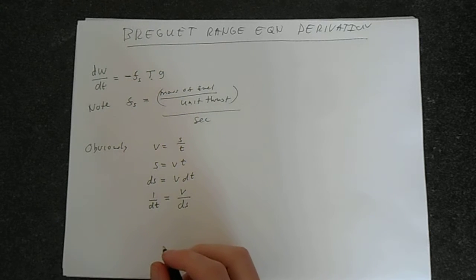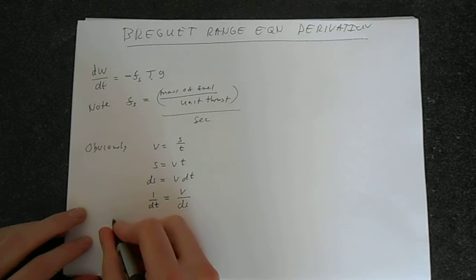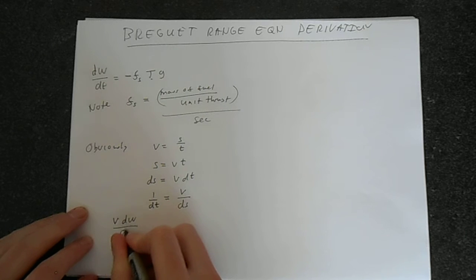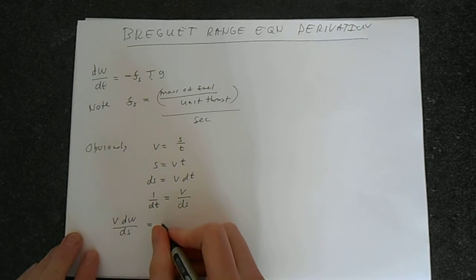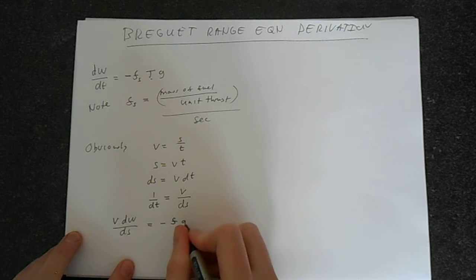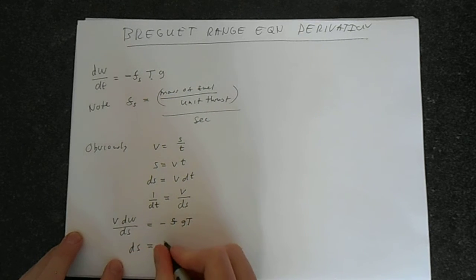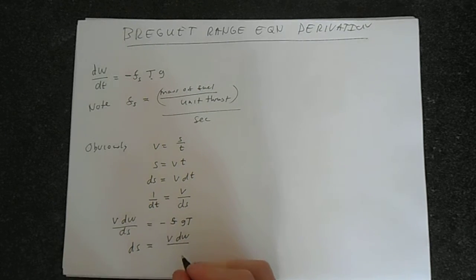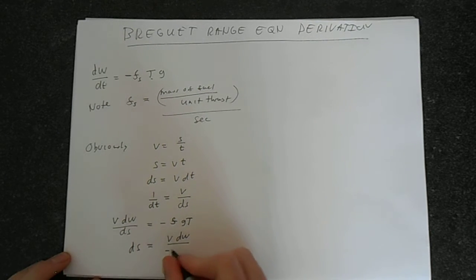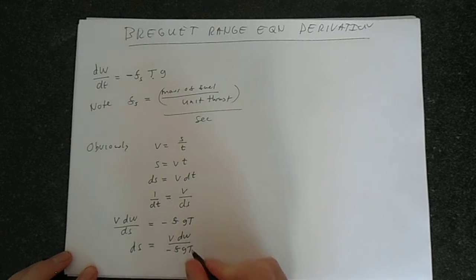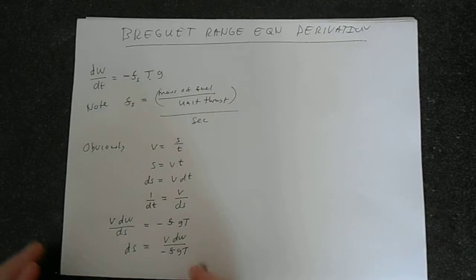So we can say that v dW over dS is equal to minus f g t. And therefore dS equals v dW divided by minus f g t. None of this is particularly difficult. We've just made the substitutions into here and rearranged for dS.